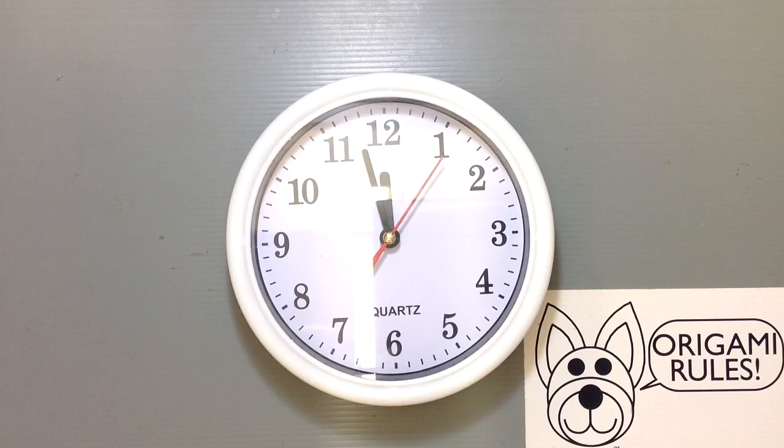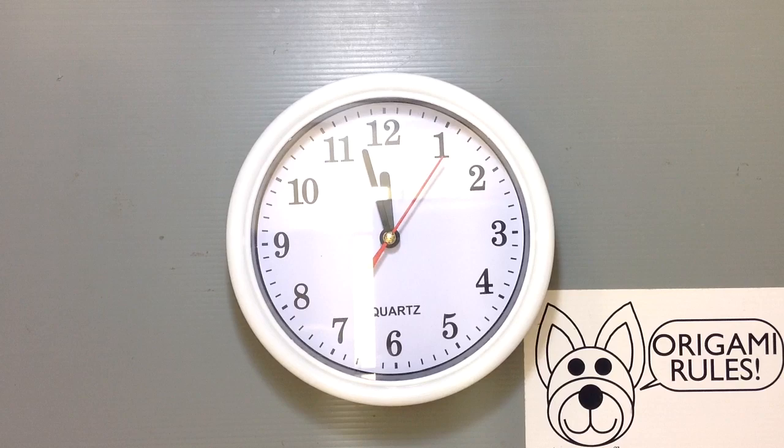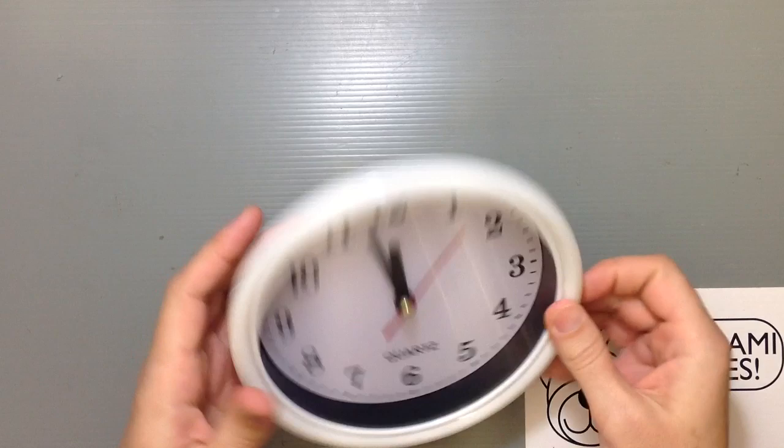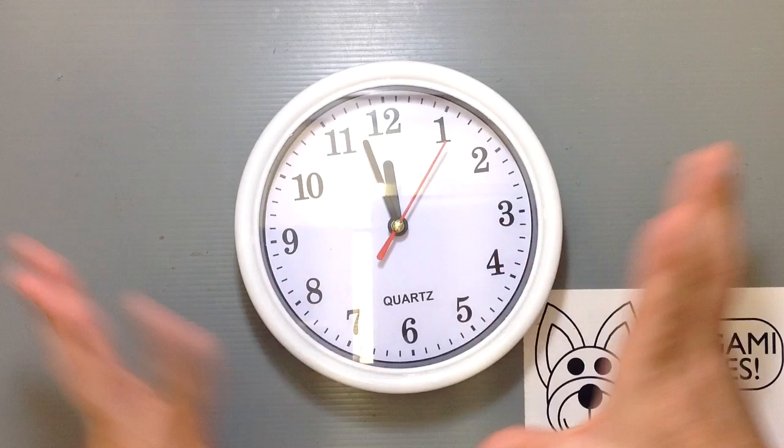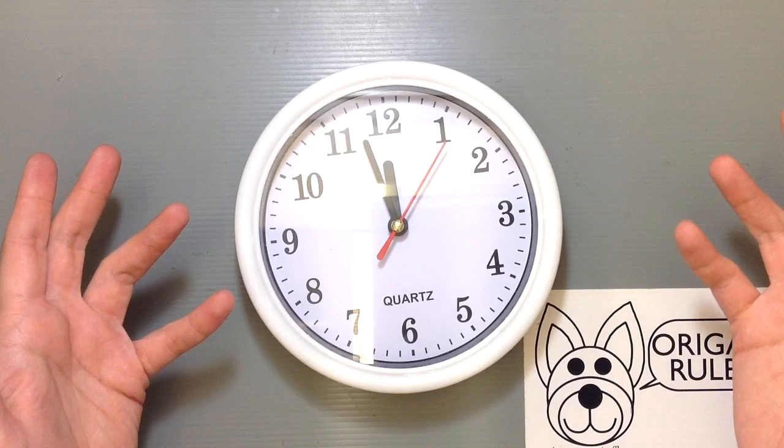Now if you have access to a Daiso or a dollar store, you can probably get some wall clocks that are super cheap and flimsy. I know these don't last all that well, but there are fun things that you can do with these. If you take them apart, you can change the face and make your own personalized gift.